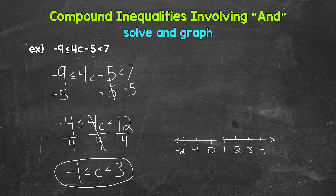We want everything greater than or equal to negative one, so negative one is included — we need a filled circle at negative one to show that. And we need everything less than three; three is not included, so we need an open circle at three. We want where these two inequalities overlap, so we shade in between.